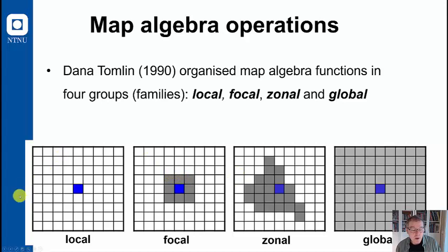We've been through already local functions which work on a cell by cell function. Today's lecture is about focal map algebra functions where it is the neighborhood of a pixel which is used to calculate a new value for the output pixel.